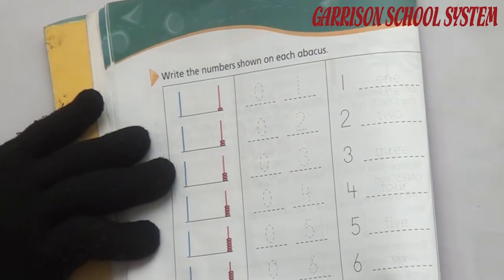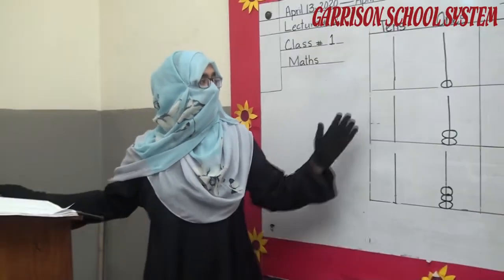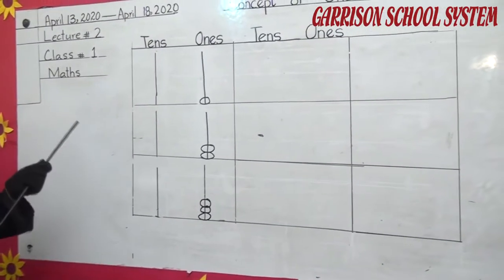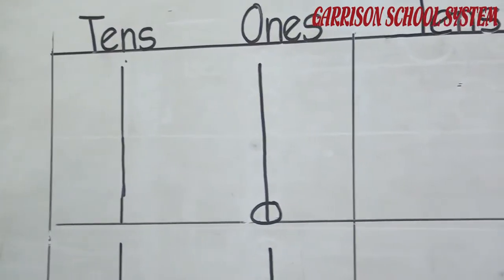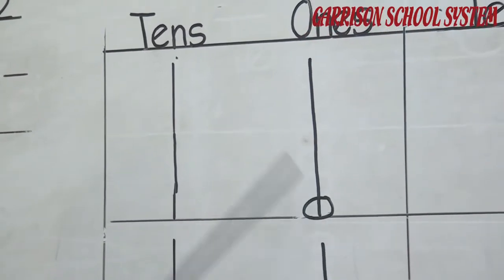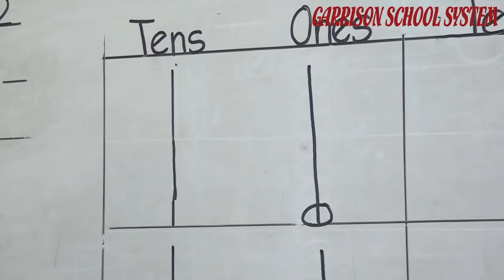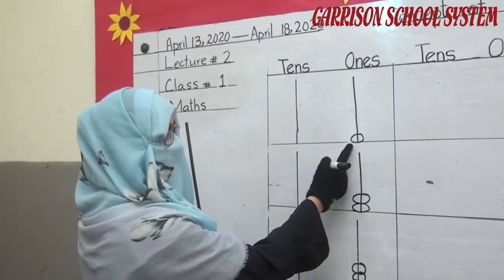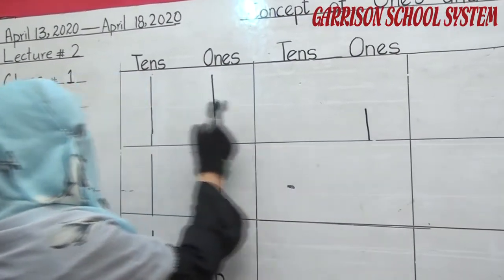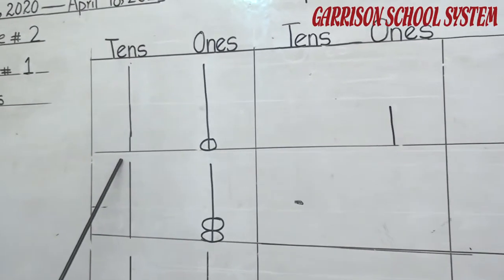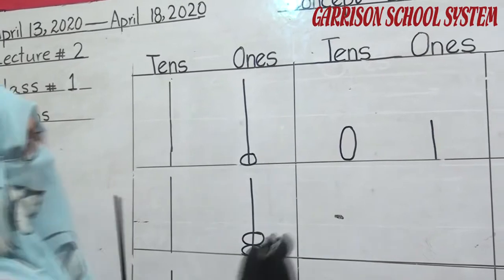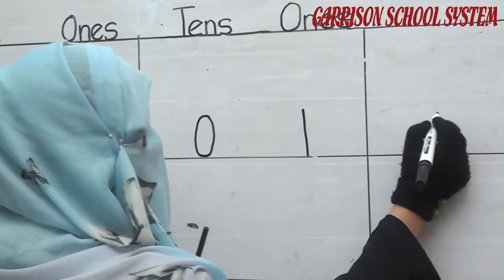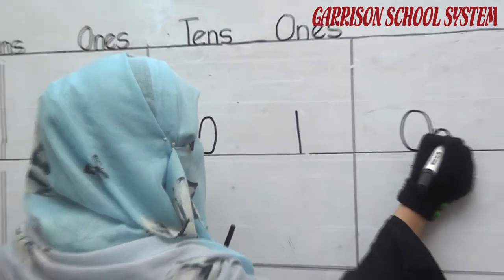Page number 12: write the numbers shown on each abacus. Okay students, I give you some examples of page number 12 on the board. Here I write tens and here I write ones. There are two rods. On the ones rod I put one bead, and on tens there is no bead. How do we write? First, we write ones — how many numbers? One. We write one here. And is there any number in tens? No — it is empty, so the value is zero. Then we write its number name: O-N-E, 1.